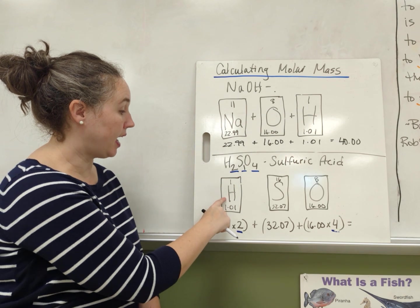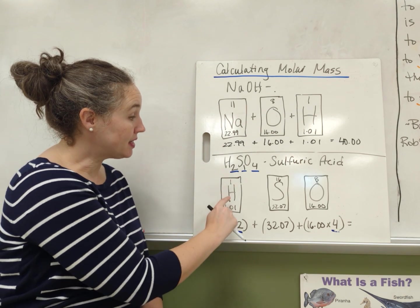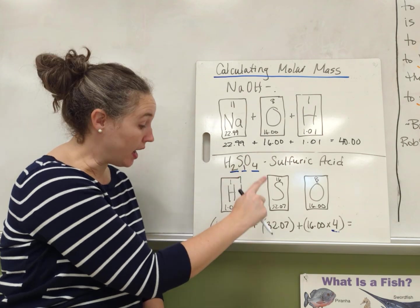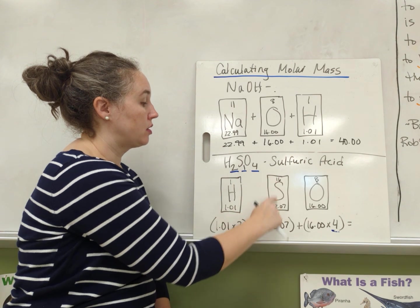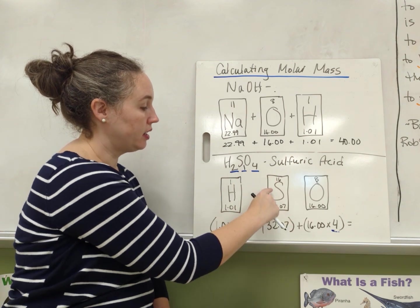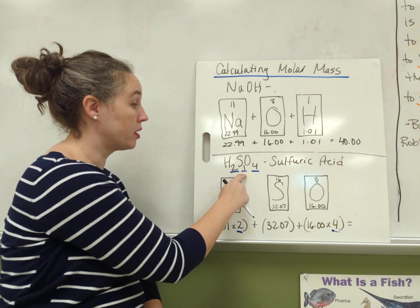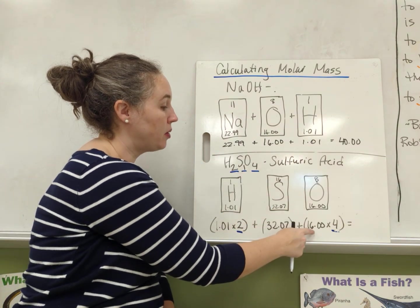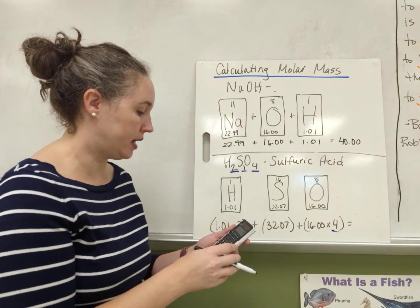So I'm going to take H. This is it on the periodic table, 1.01. And in this case, since I have two atoms of that, I'm going to multiply that by two. 32.07 is it for sulfur. Multiply by one because I just have one of those. And oxygen is 16. I'm going to multiply that by four to get my final answer.